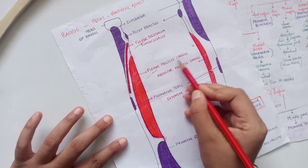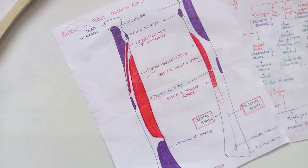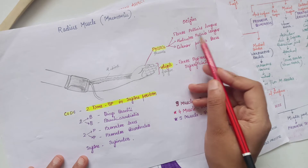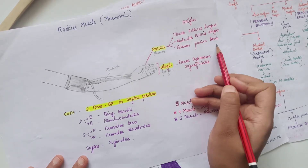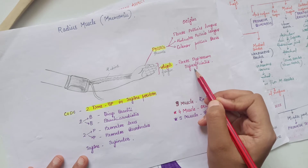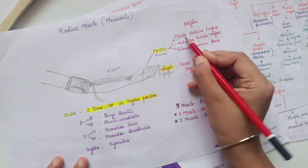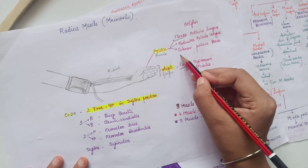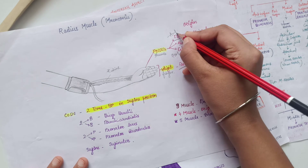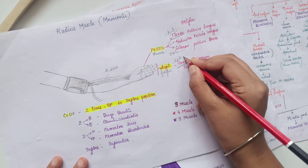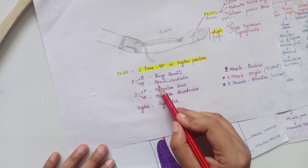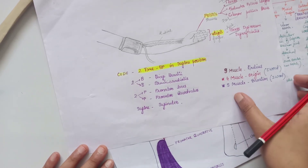Mnemonic tip: Any muscle whose name starts with three letters has an origin. Any muscle with the word 'flexion' will be on the anterior aspect. Abductor pollicis longus and extensor pollicis brevis are present on the posterior surface. The insertions here include biceps brachii, brachioradialis, pronator teres, and pronator quadratus. Thank you.